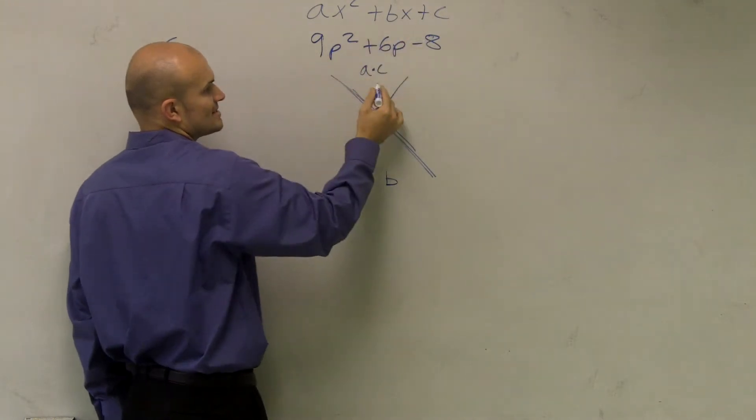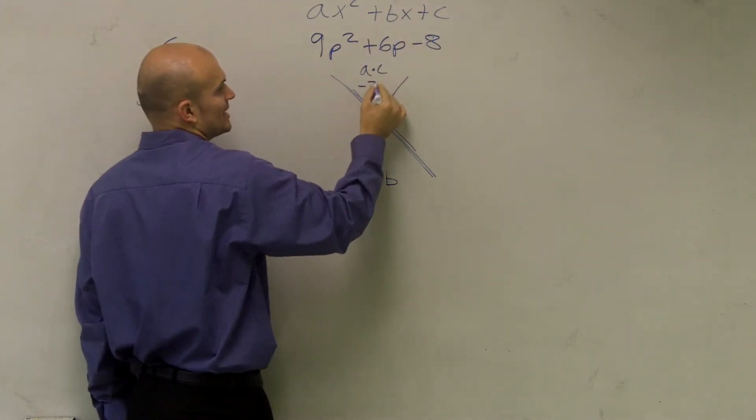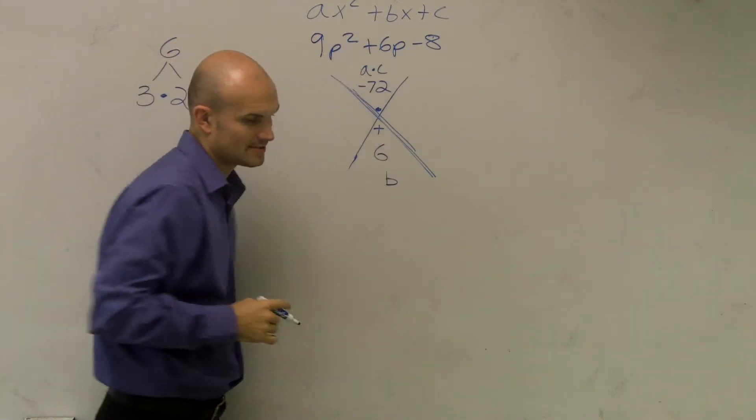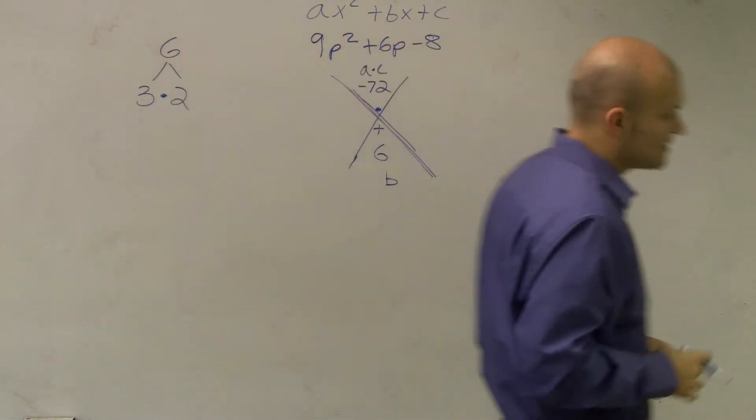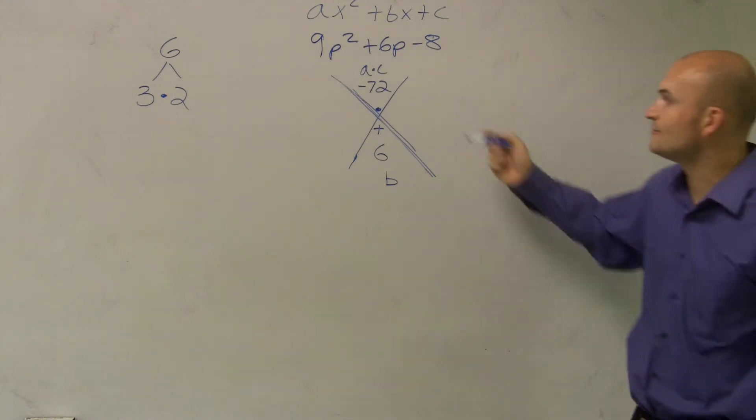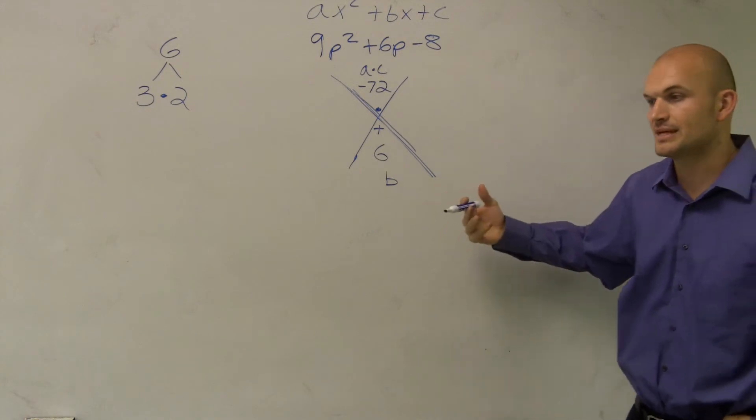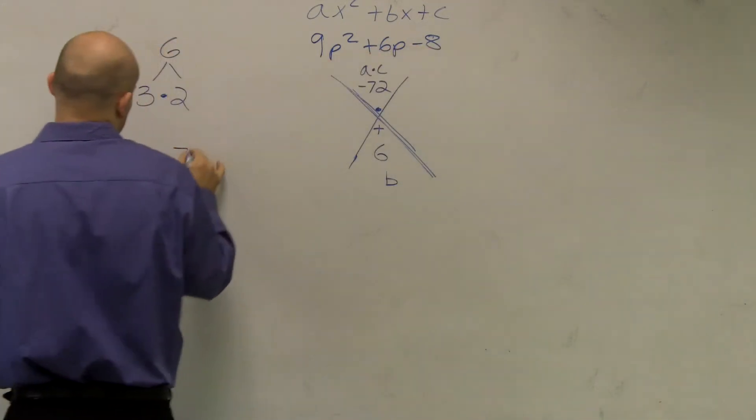So a times c, my a is 9, my c is -8. So that's going to give me -72. My b is the number in front of my x, which is going to be 6. So now when I wrote that plus and that minus for us, now what I need to do is I need to figure out what two numbers multiply to give me -72 but add to give me a positive 6.